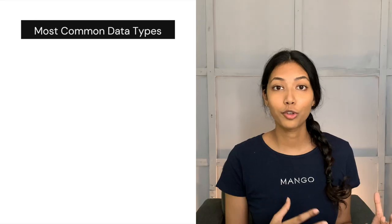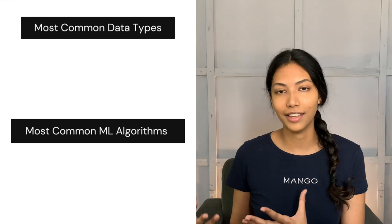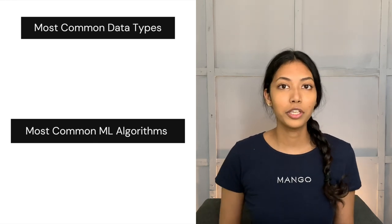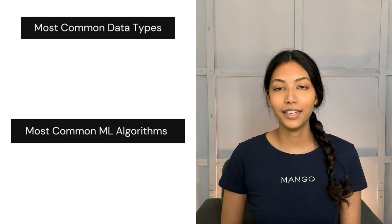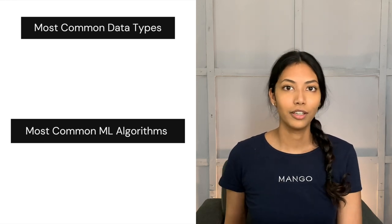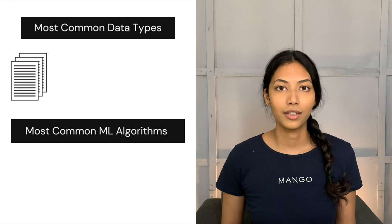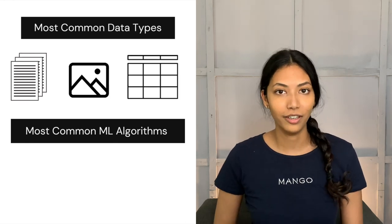So what exactly are the top machine learning libraries? To look at these we have to identify what are some of the most common data types and the most common machine learning algorithms so we can find very specific libraries for that. The most common data types we work with in machine learning projects are images, text, and of course tabular data.